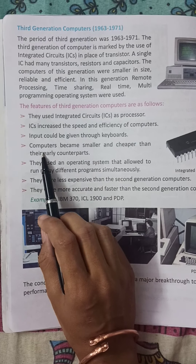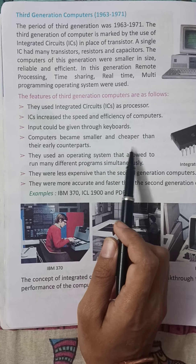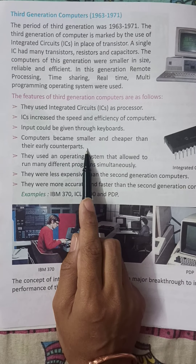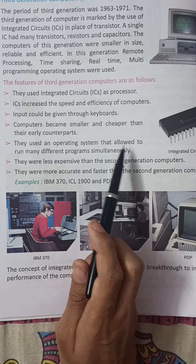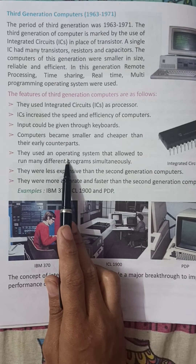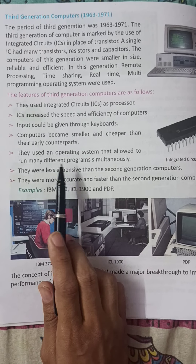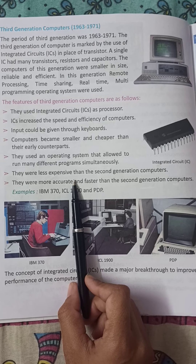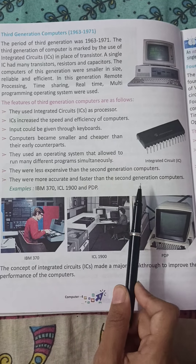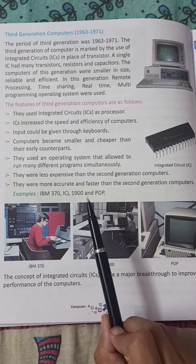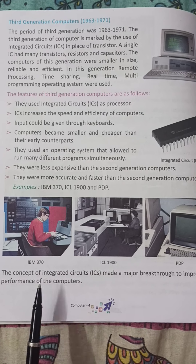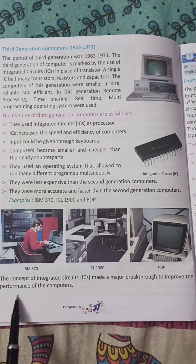Input could be given through keyboards. Computers became smaller and cheaper than their early counterparts. They used an operating system that allowed many different programs to run simultaneously. They were less expensive and more accurate and faster than second generation computers. Examples include IBM 370, ICL 1900, and PDP.